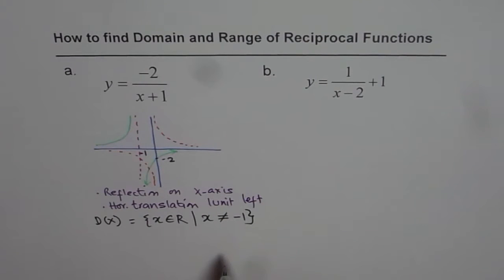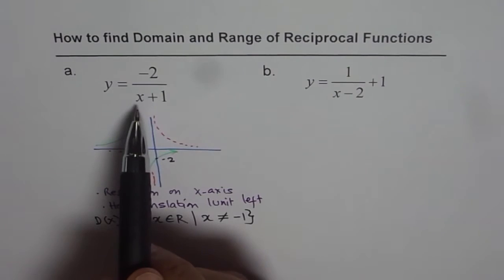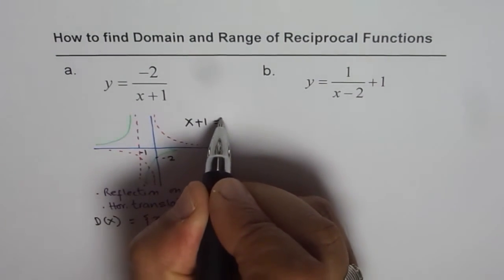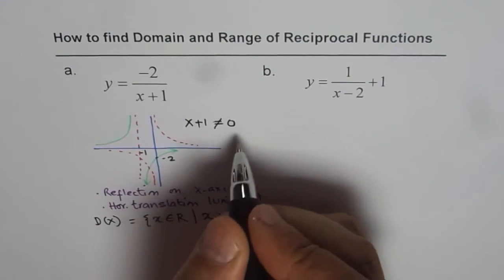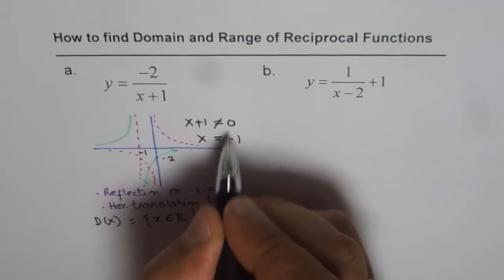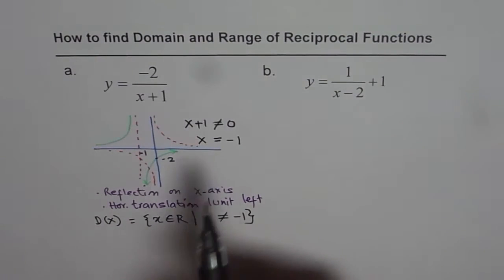The other way of doing it is we cannot divide by 0. So we can equate the denominator, that is x plus 1, not equal to 0, and solve for x. So we get x not equal to minus 1. So that is a straightforward method even without looking into transformation. We get the same answer.